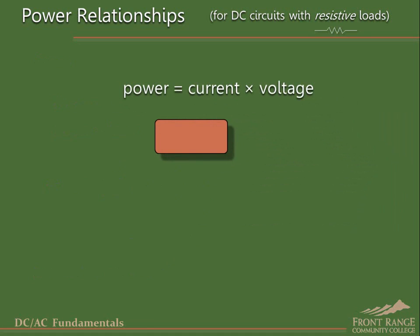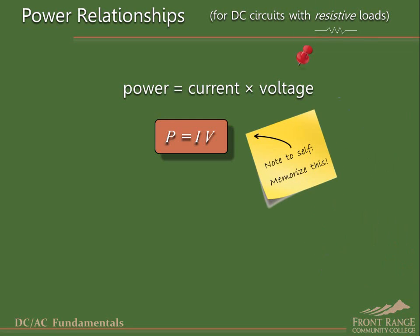So again, electrical power P is equal to current I times voltage V. This relationship is often incorrectly referred to as Watt's Law, but is really a statement of Joule's Law. In this course we will usually call it simply the power formula. You will be using this important relationship often as you work with electricity, so you should take the time to fully commit it to memory.